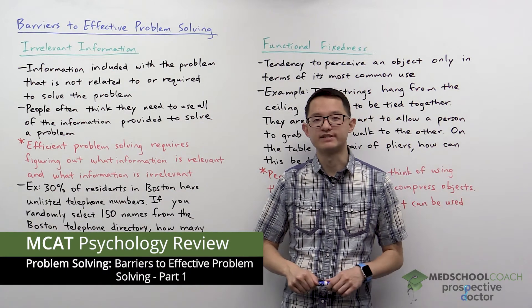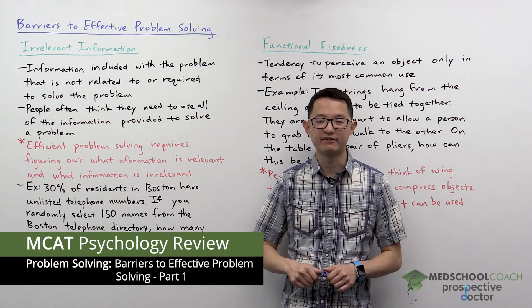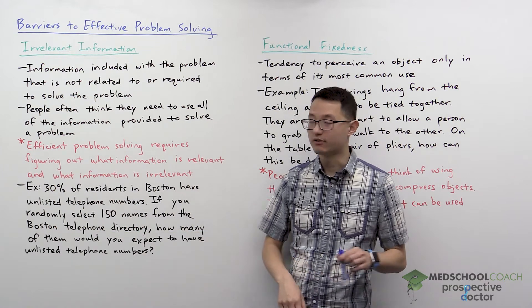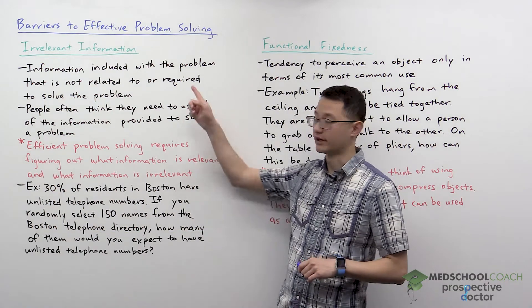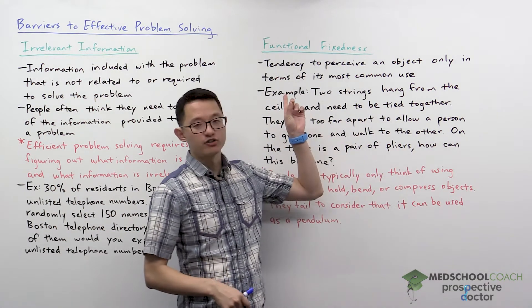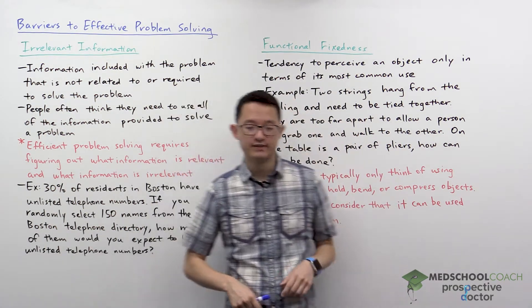In this video we're going to start discussing barriers to effective problem solving. In particular, we're going to go over irrelevant information and functional fixedness.